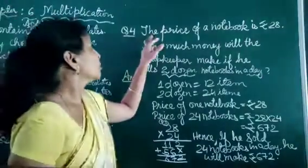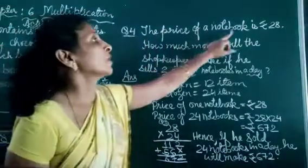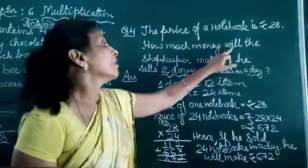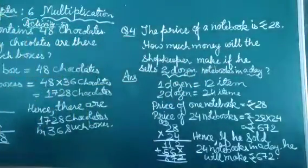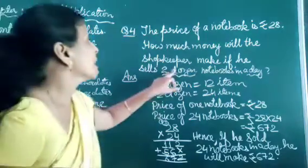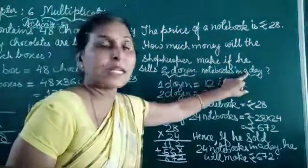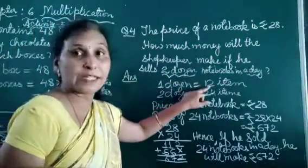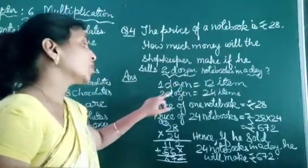Now, question number 4. The price of a notebook is Rs. 28. How much money will the shopkeeper make if he sells 2 dozen notebooks in a day? Children, in 1 dozen, 12 items will be there. So in 2 dozen, 24 items.